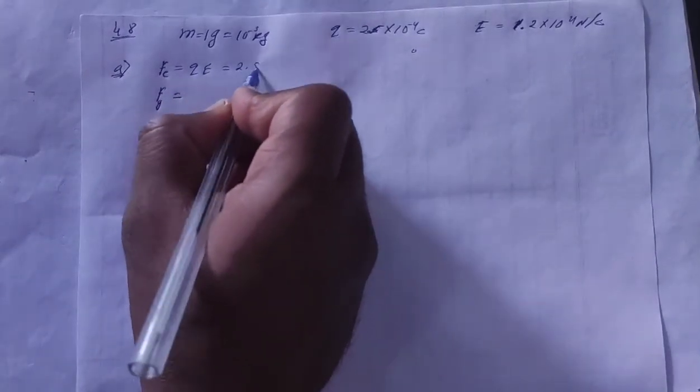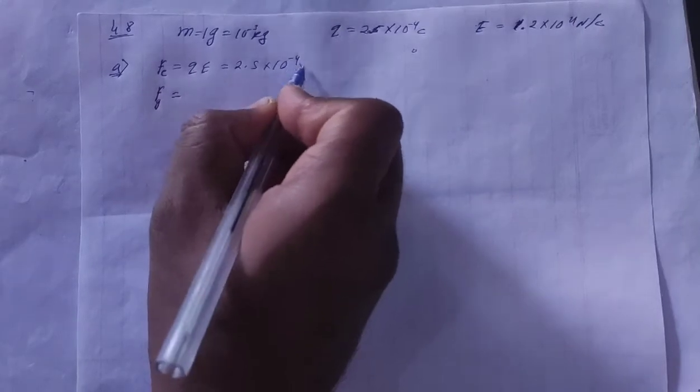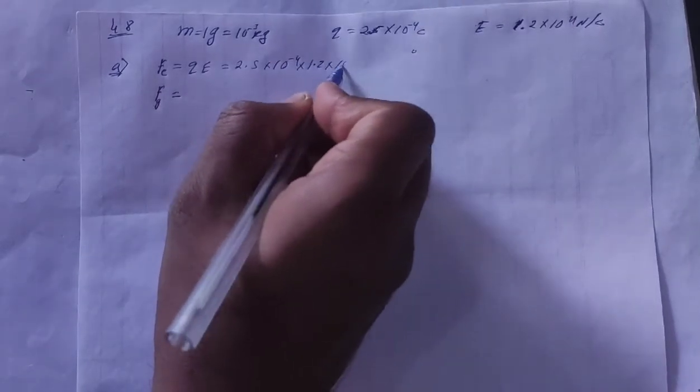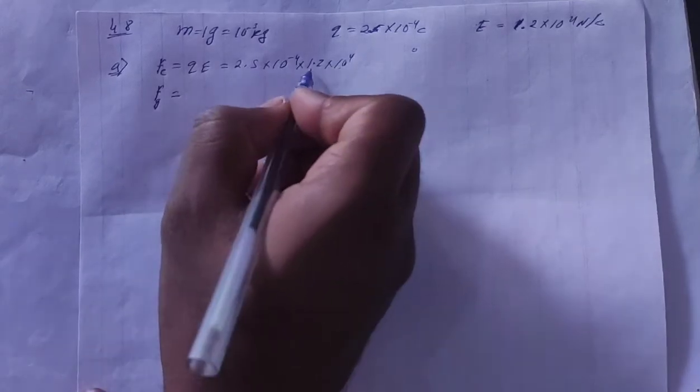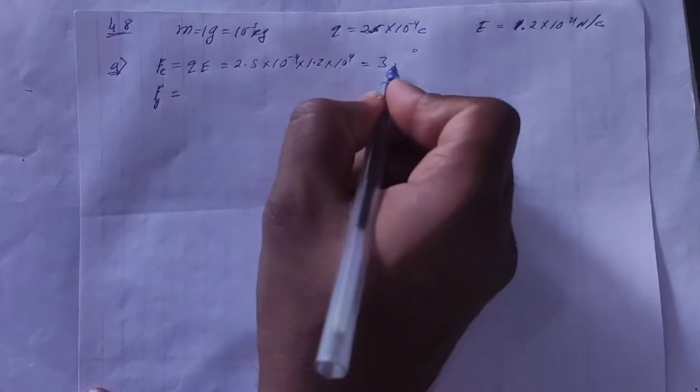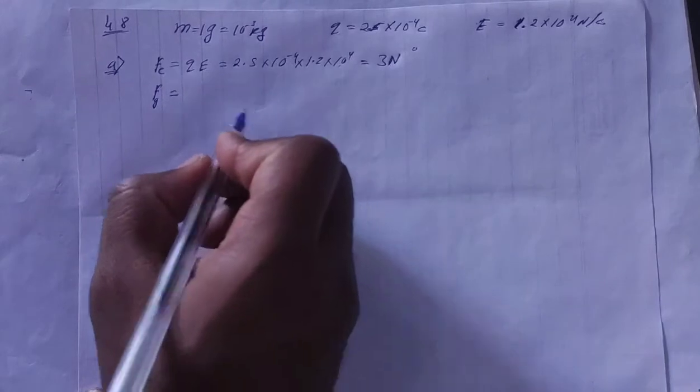Q is 2.5 into 10 to the power minus 4, E is 1.2 into 10 to the power plus 4. Plus 4 minus 4, these charges cancel out. 2.5 times 1.2 is 3. So the electrostatic force will be 3 newton.